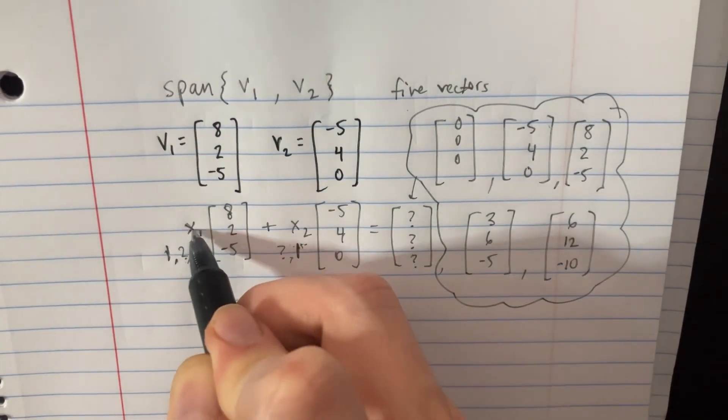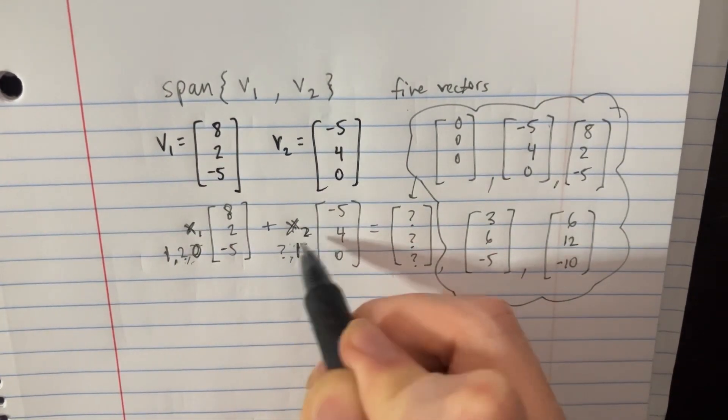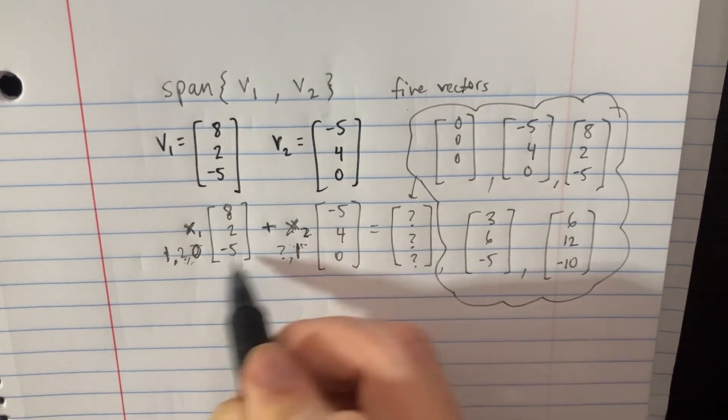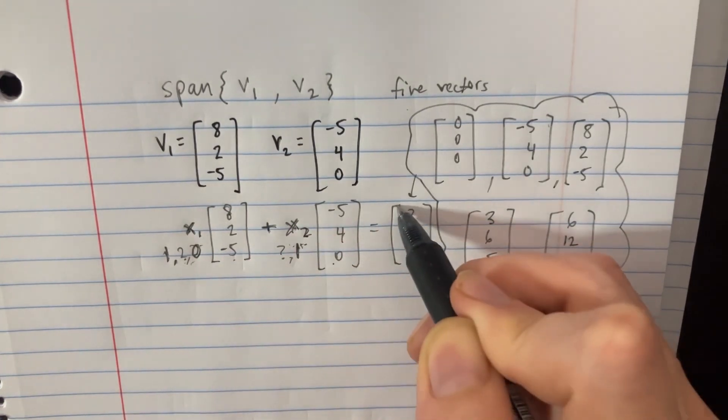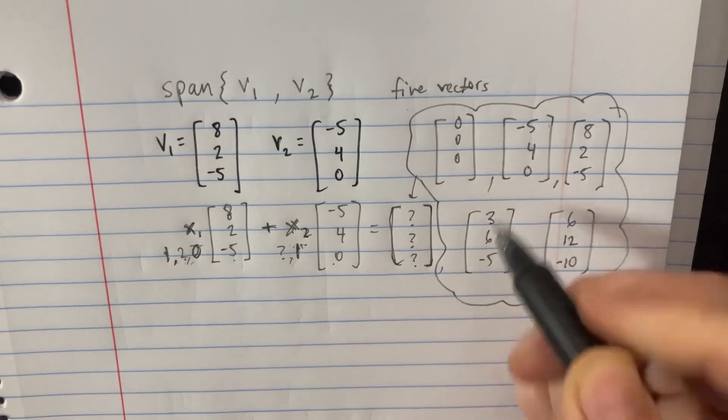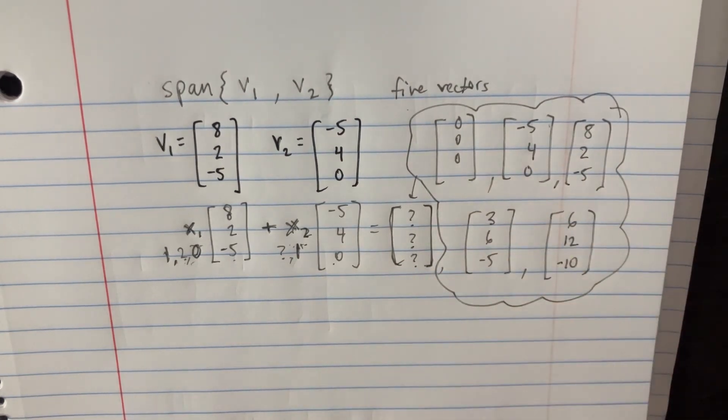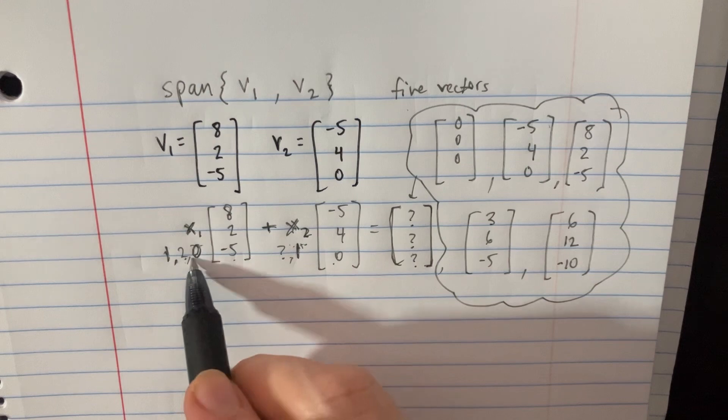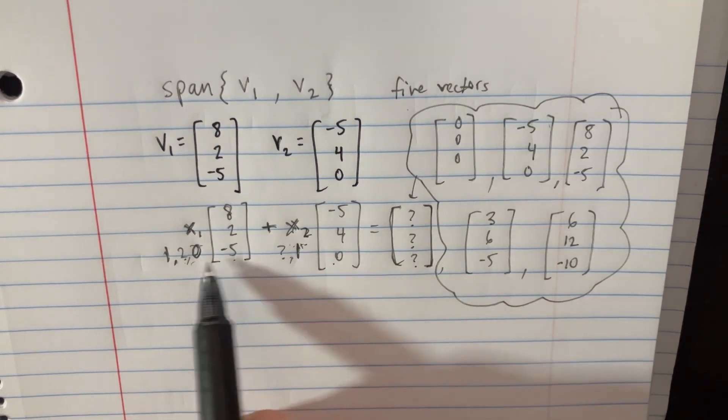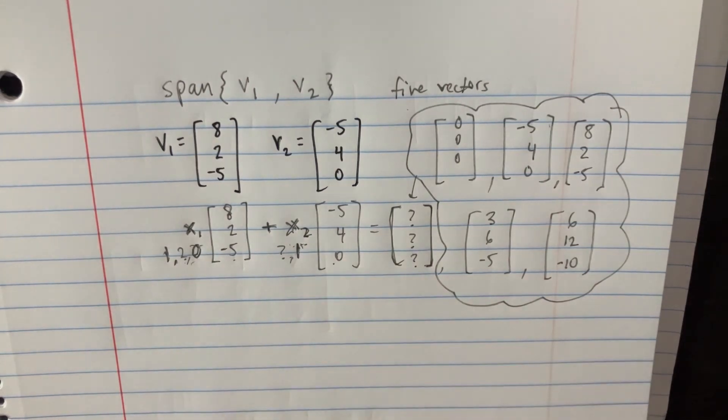You're just going to set up this equation right here, because this is a linear combination of vectors. This will give you some answers over here, and these are some possible answers that we can find, just depending on what coefficients we put in front of those vectors.